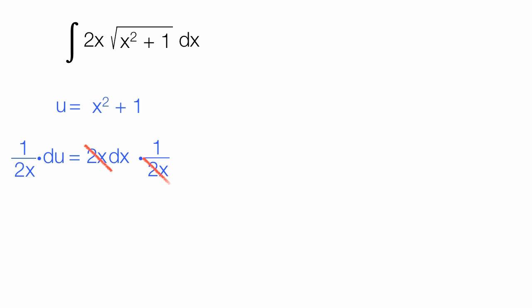I multiply both sides of the equation by 1 over 2x. On the right-hand side, these 2x's cancel out. I'm going to take this answer, which is du over 2x, and in a moment, I'm going to sub it right up there.